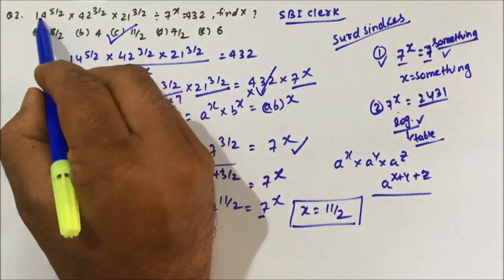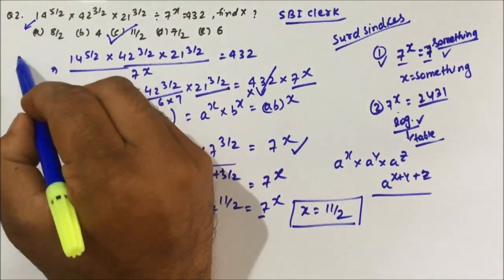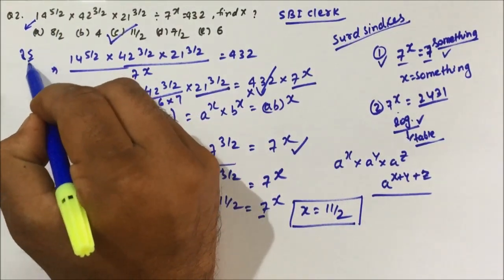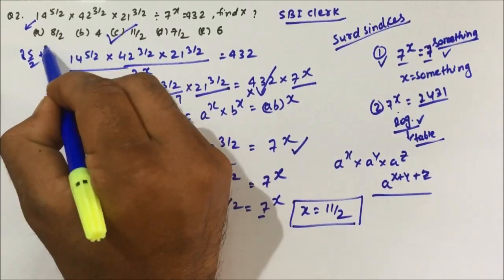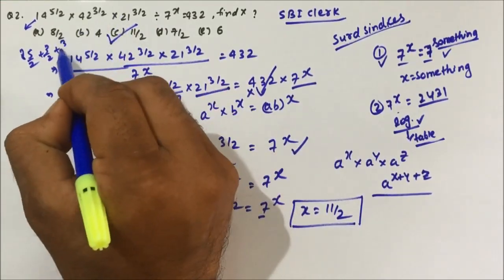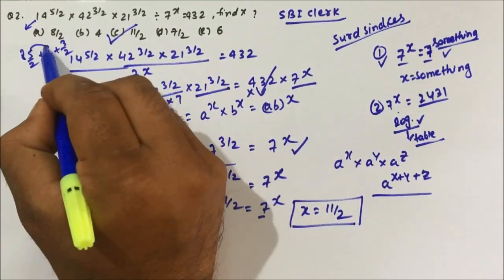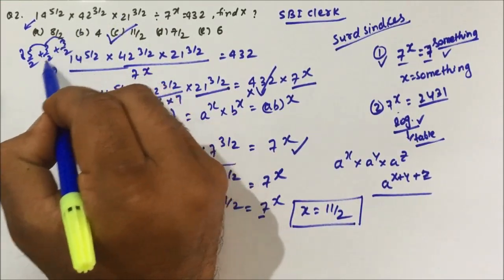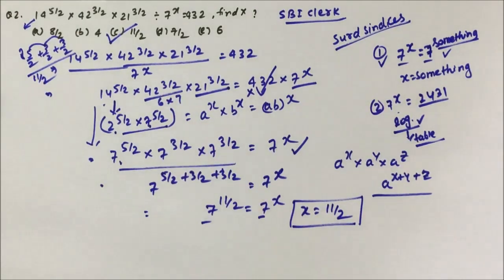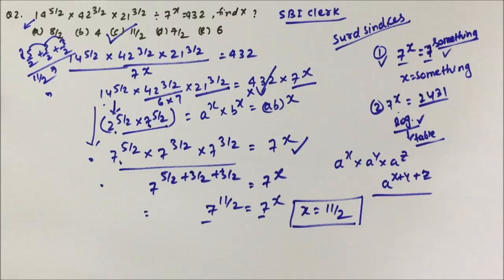So directly: from 14^(5/2) take 5/2, from 42^(3/2) take 3/2, from 21^(3/2) take 3/2. Then 5/2 + 3/2 + 3/2 = 11/2, which is the value of x. I hope you understood the question and the solution. Thanks for watching the video.